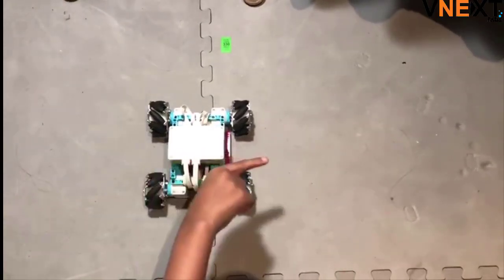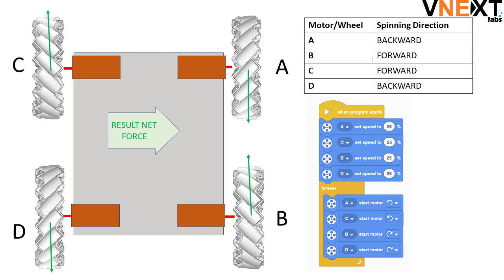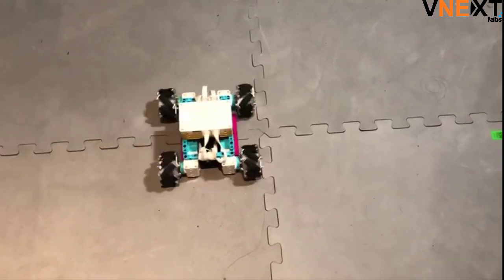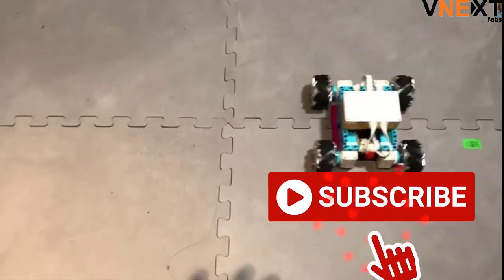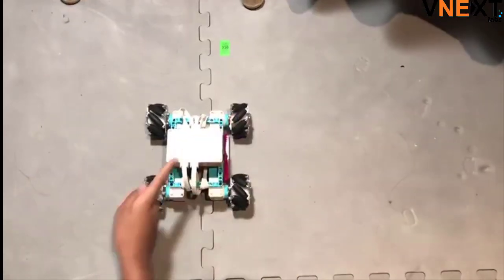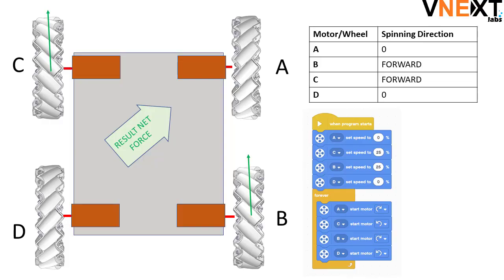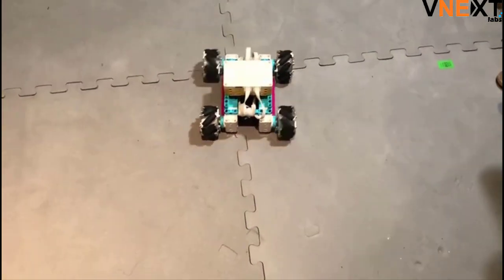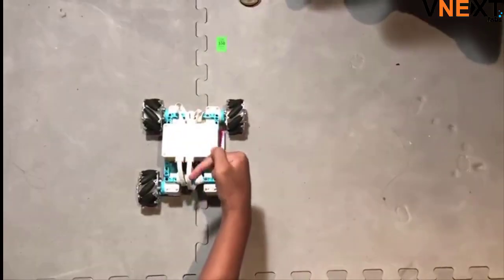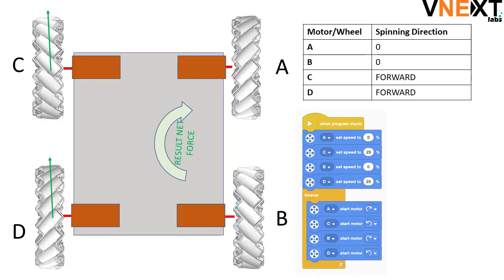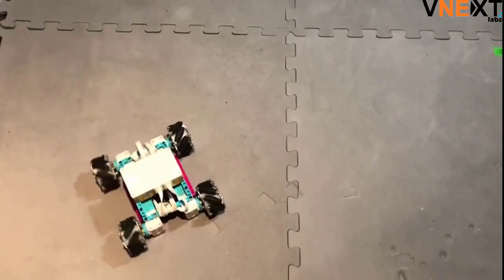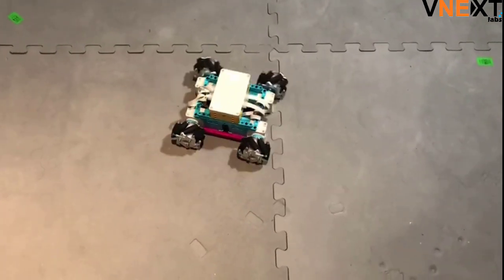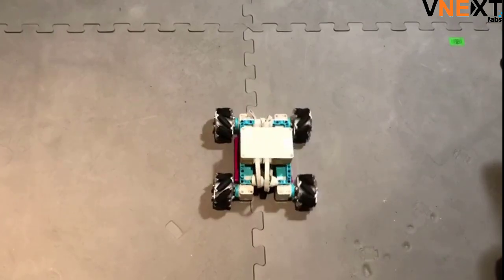Sideways motion. Various sideways directional configurations are demonstrated, showing how the robot moves laterally in different directions based on the wheel drive combinations.